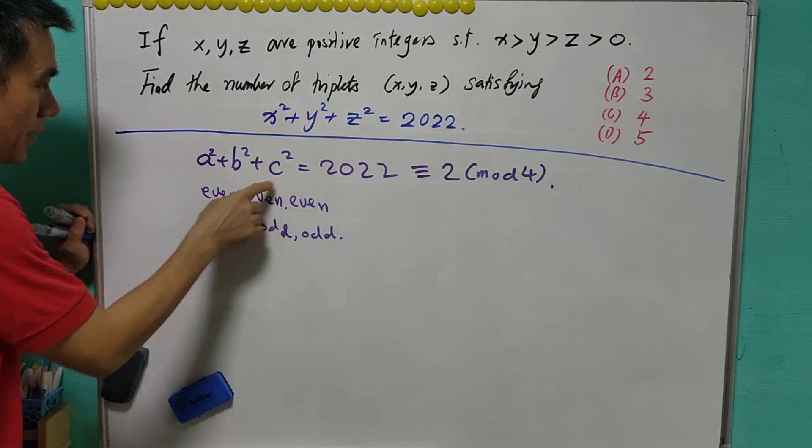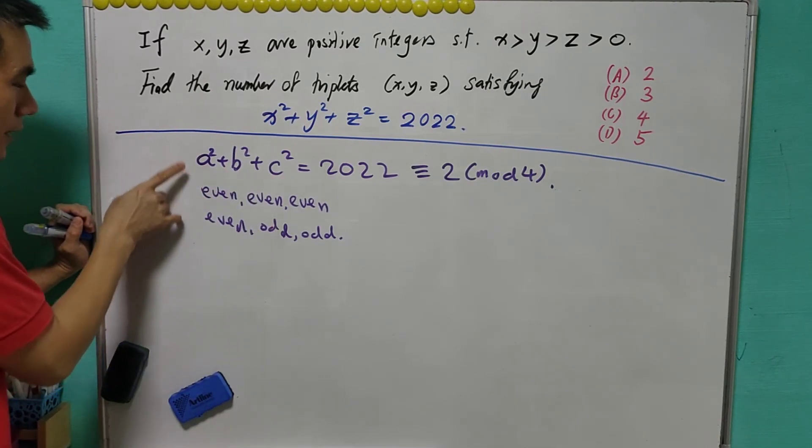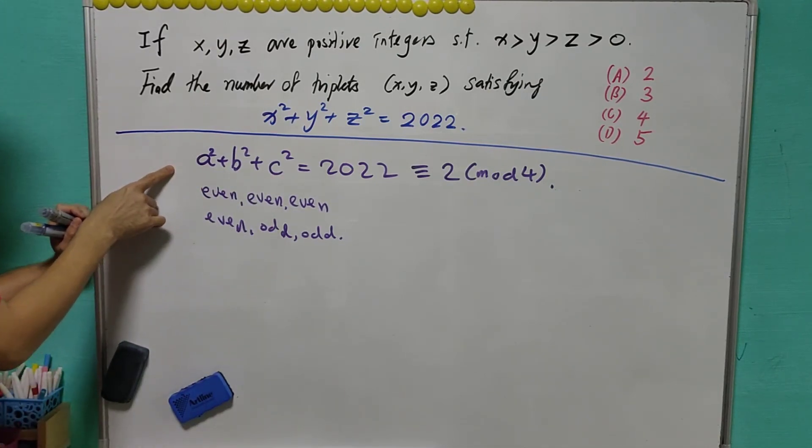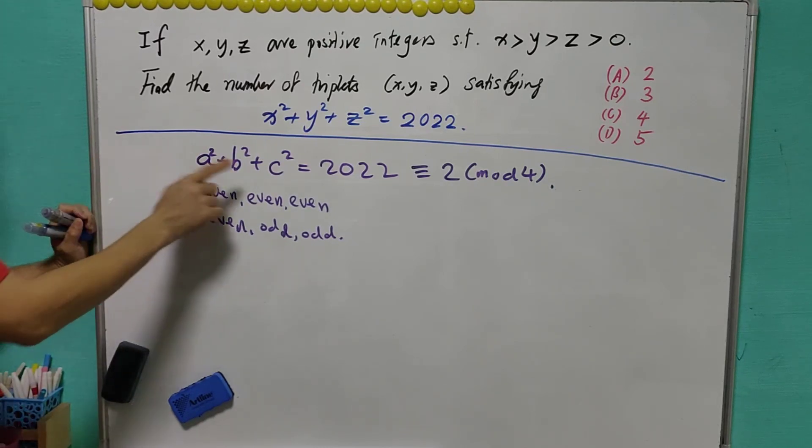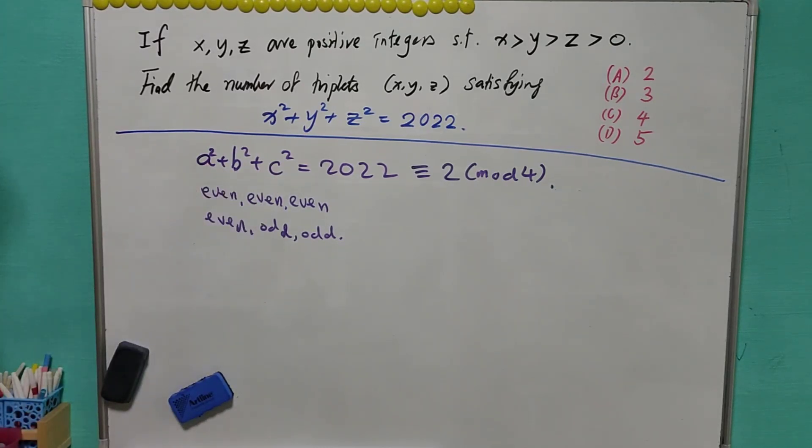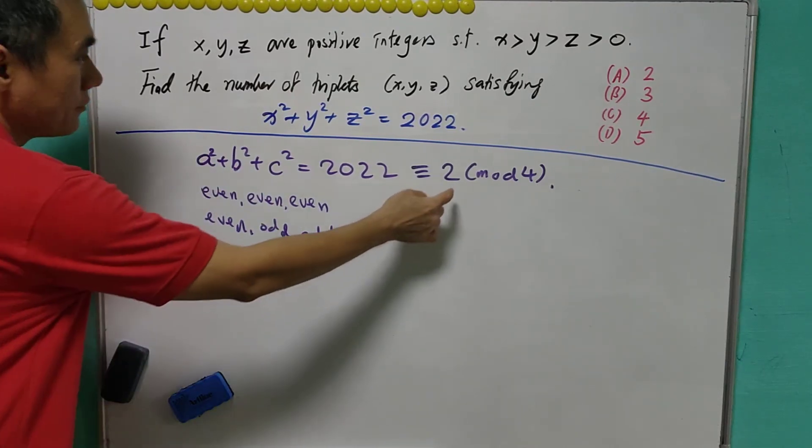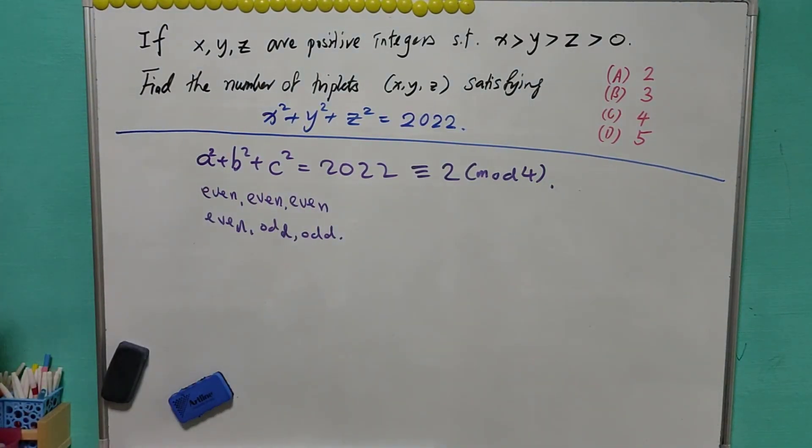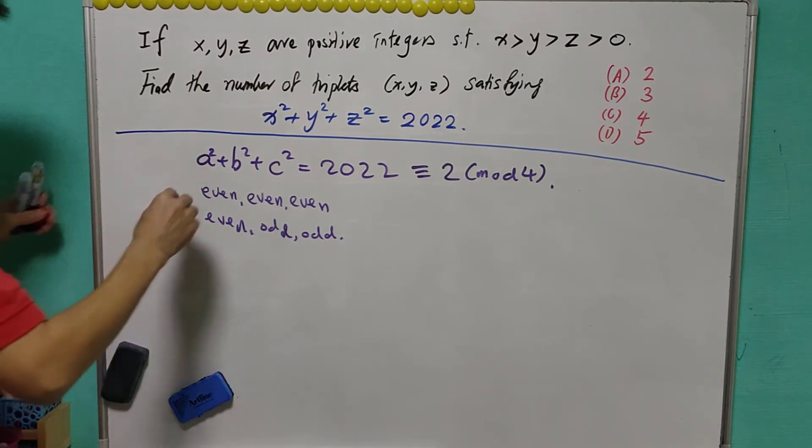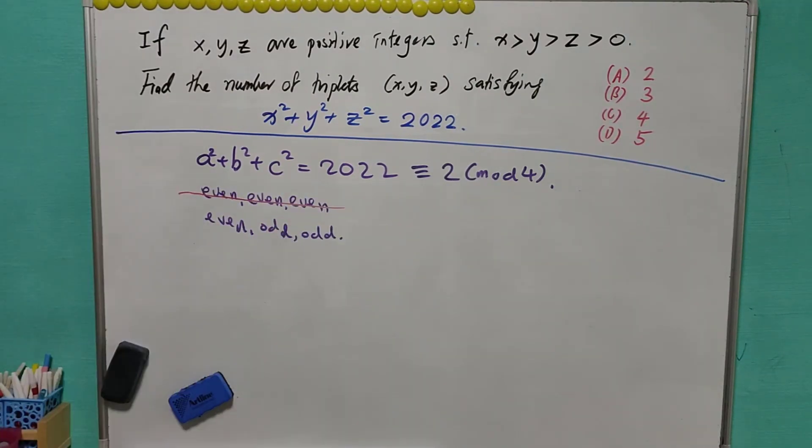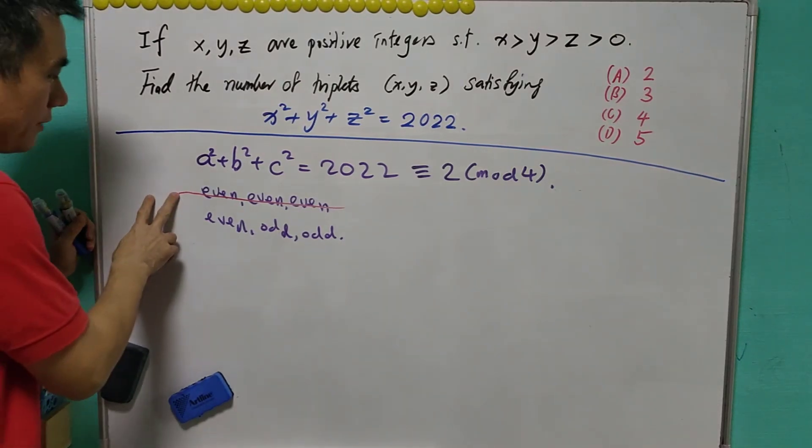Now, if all a, b, c are even numbers, then a square will be a multiple of 4, b square will be a multiple of 4, and c square will be a multiple of 4. And the sum will be a multiple of 4. And this is a contradiction because 2022 is not a multiple of 4. So this is not possible. And it means that it must be one even and two odds.